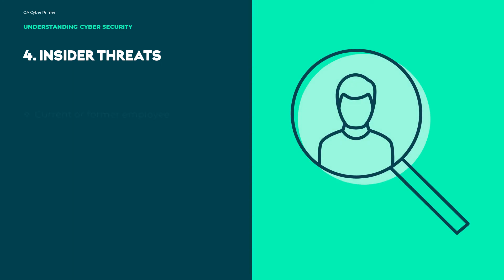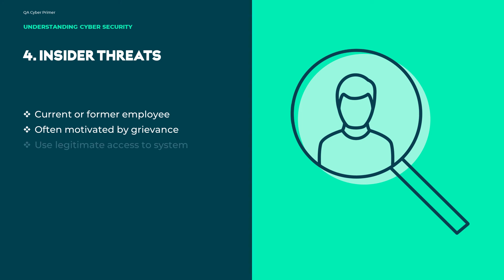Insider threats are normally current or former employees that have some knowledge of the computer and network systems of the organisation. They are often motivated by grievance, or possibly to subvert the mission of the organisation. They use legitimate access, such as having a login, to attack one or more aspects of the CIA triad. They typically steal or damage business-critical information for personal gain or revenge, such as the case of a former Morrison supermarket worker who dumped the personal details of over 100,000 colleagues online.